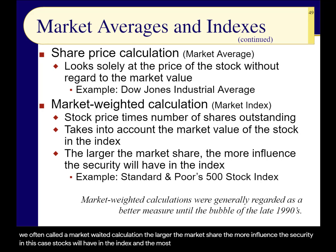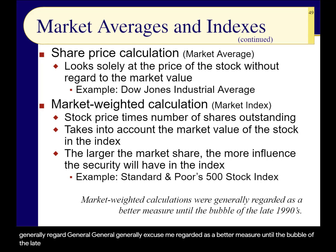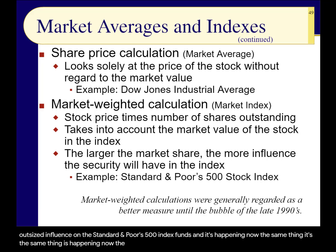The idea is that a company worth more is going to have more weight — that's why we call it a market-weighted calculation. The larger the market share, the more influence the security will have in the index. The most popular is the Standard & Poor's 500 index. These were generally regarded as a better measure until the bubble of the late 1990s, when tech stocks had an outsized influence on the S&P 500. And the same thing is happening now — the 10 largest companies in the S&P 500 dwarf most of the other stocks.